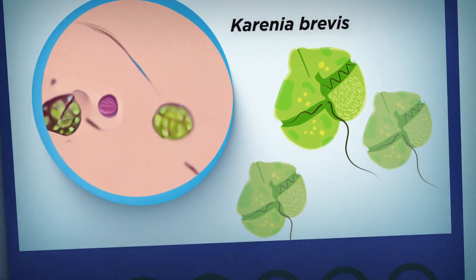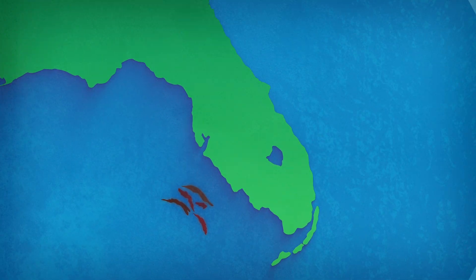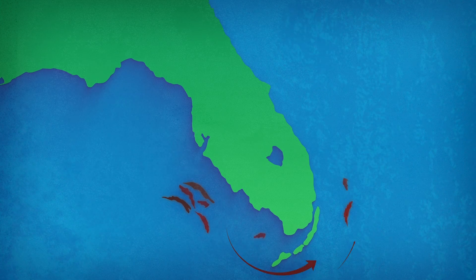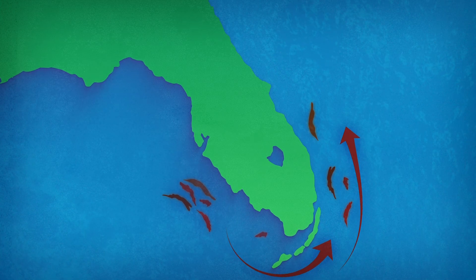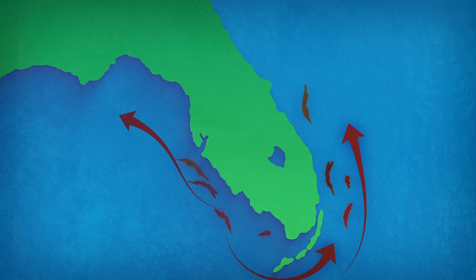A bloom can last for days, weeks, or even years. Red tide is occasionally transported from the Gulf to the U.S. east coast and has been observed up to North Carolina, and due to a variety of factors its location can change rapidly.